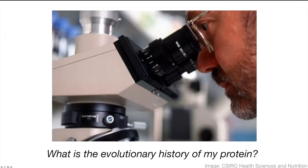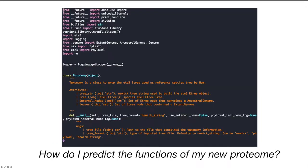Imagine the following scenarios. You're a molecular biologist studying a particular gene in the laboratory. You mainly do wet lab experiments, but you want to know more about your protein and its evolutionary history. Where do you start? Or you're a bioinformatics PhD student working in a lab that just sequenced a rare species. You've been tasked with the annotation and functional prediction of its proteins. Where do you begin?